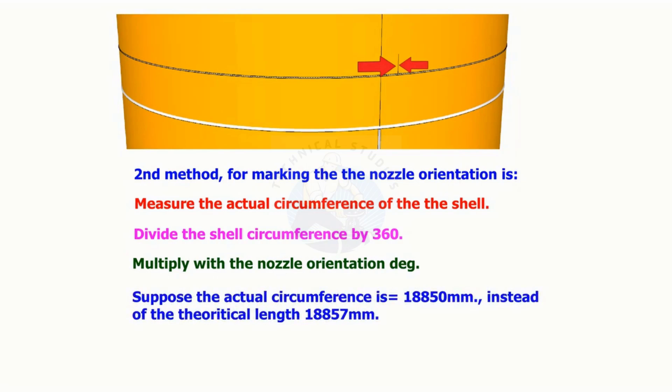1 degree length will be 18,850 divided by 360 equals 52.361 millimeters, instead of 52.38 millimeters.